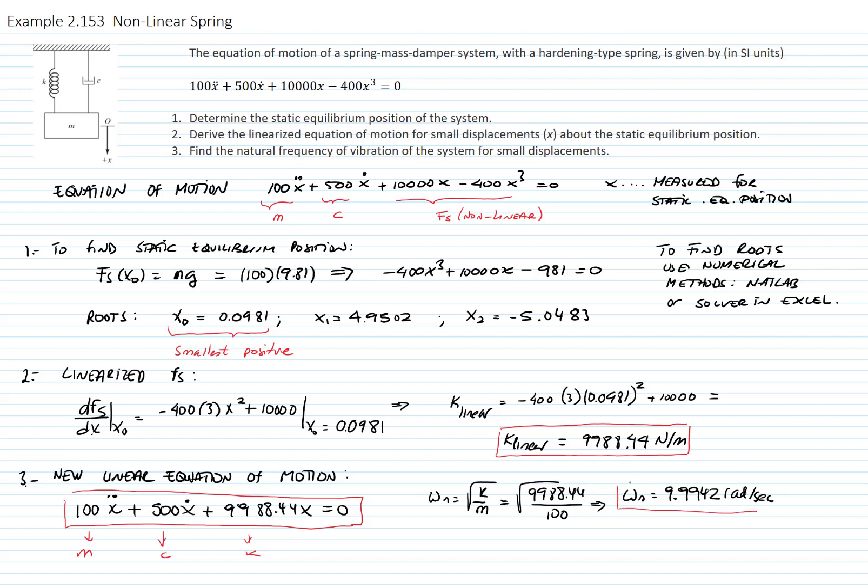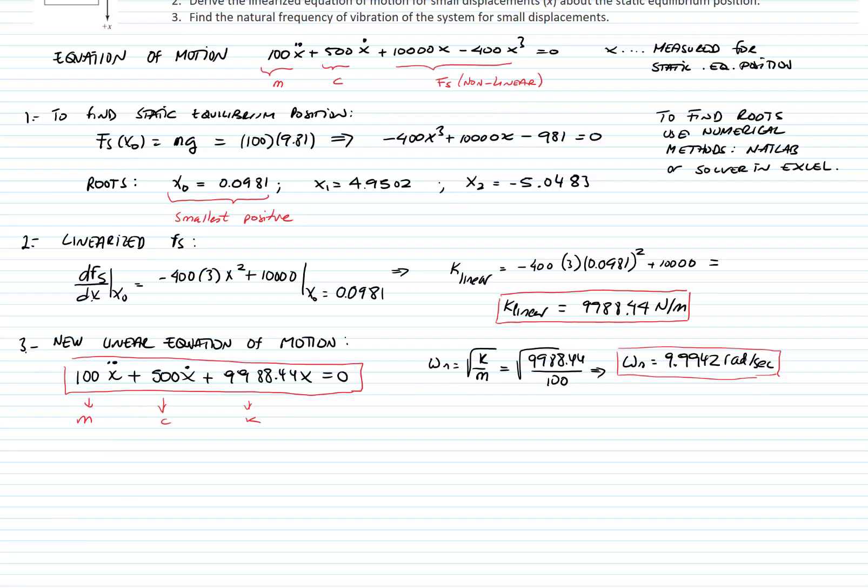This is what the problem asks, so we already solved the problem. We could go a little bit further and, for example, determine what is the type of the response of the system about this equilibrium position. What I will do is find the damping ratio to see which type of system we have. Is it an overdamped system? Is it an underdamped system? Is it a critically damped system?